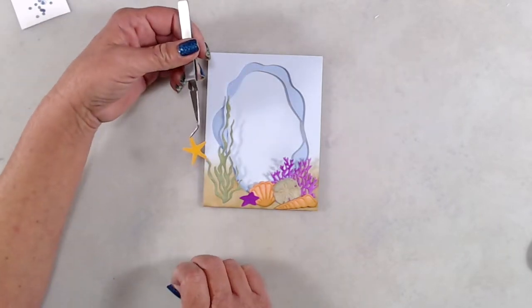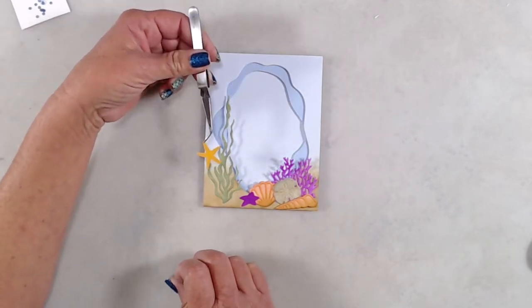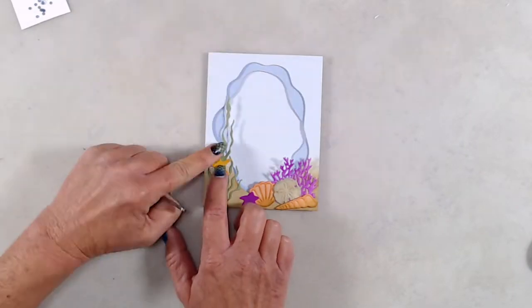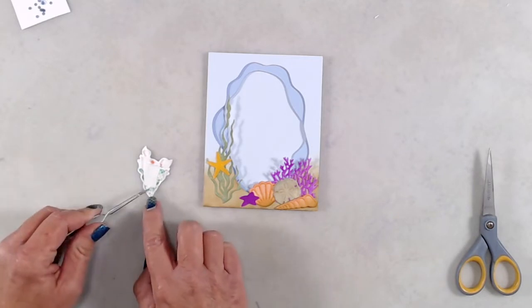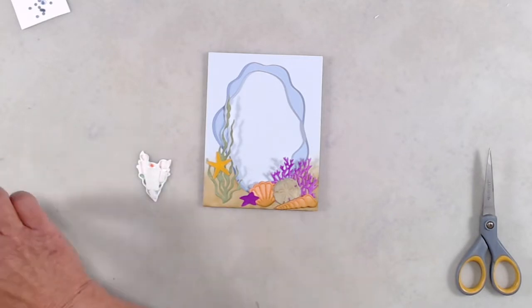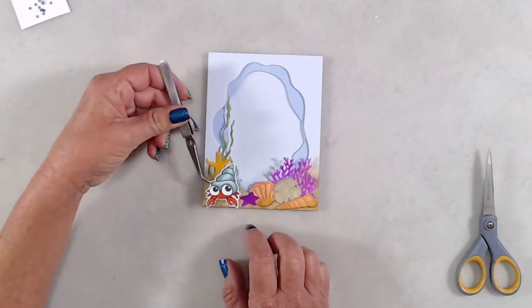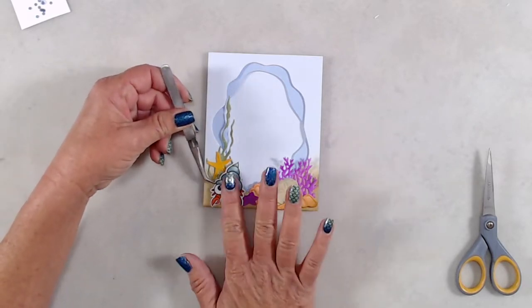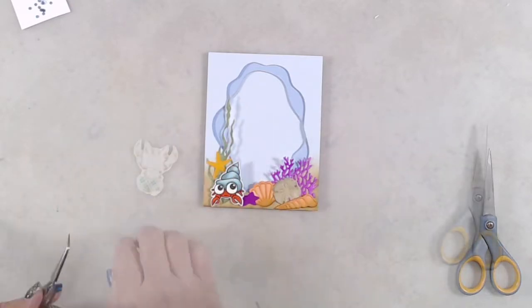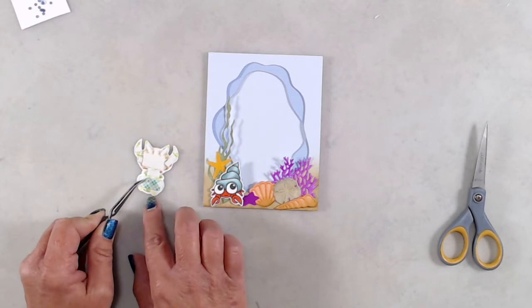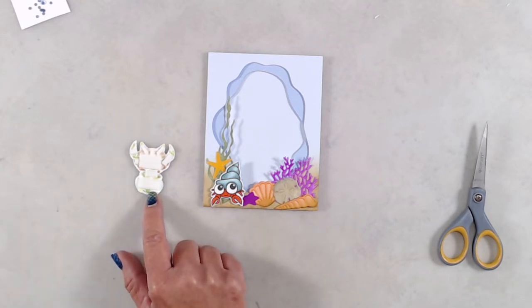One thing that I kept in mind while I was putting all of the elements on the bottom of this card is I knew that my little hermit crab was going to take up quite a bit of space in the bottom left hand corner, so I made sure to have a cluster of stuff over on the right hand side. Then the purple coral was just kind of there all by itself, so I decided to add in a small purple starfish.